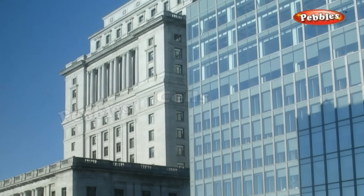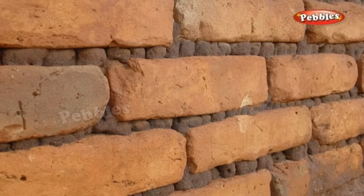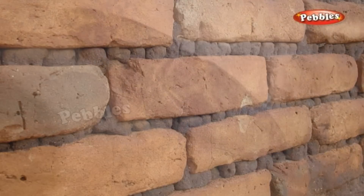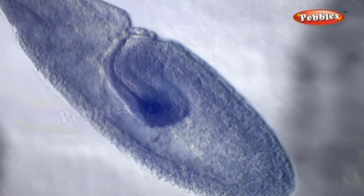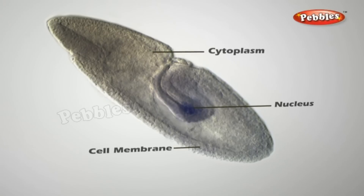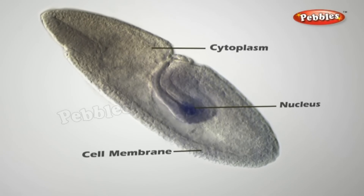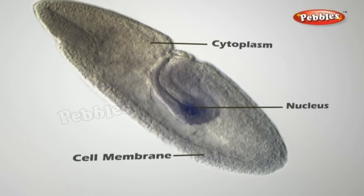Cell. You have seen that buildings are made of bricks. Similarly, the bodies of living organisms are made of tiny units called cells. Cells can be seen only under the microscope. Some organisms are made of only one cell. The cell is enclosed by a thin outer boundary called the cell membrane. Most cells have a distinct, centrally located spherical structure called the nucleus.